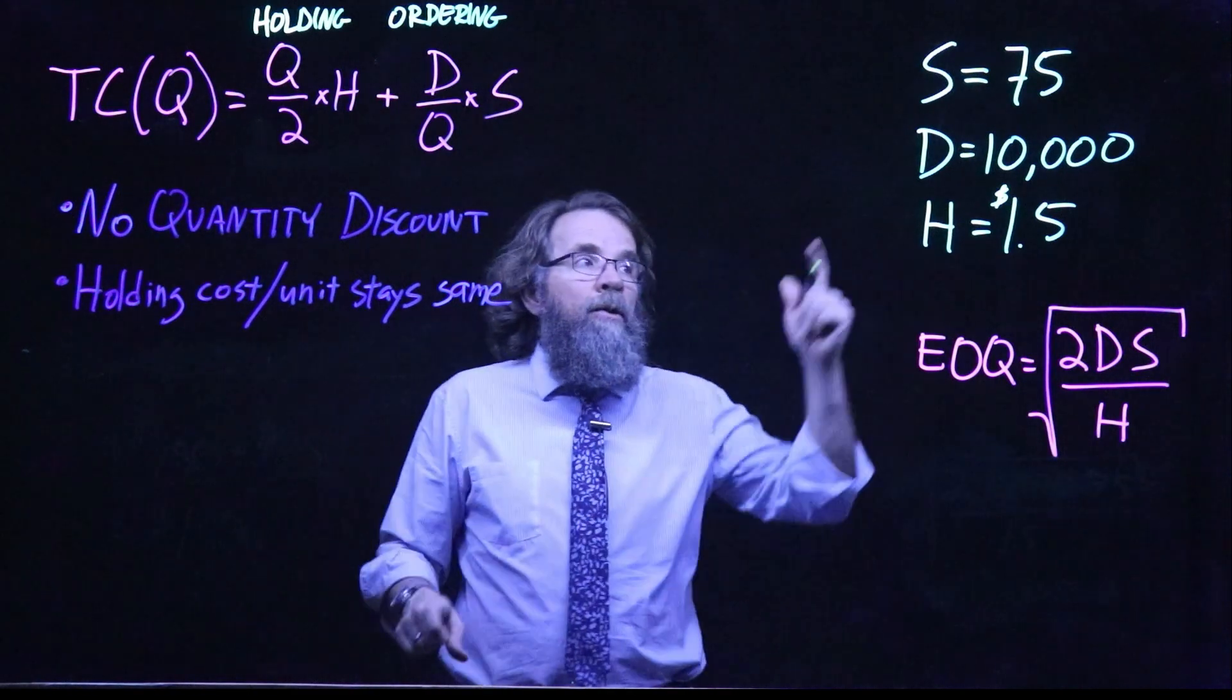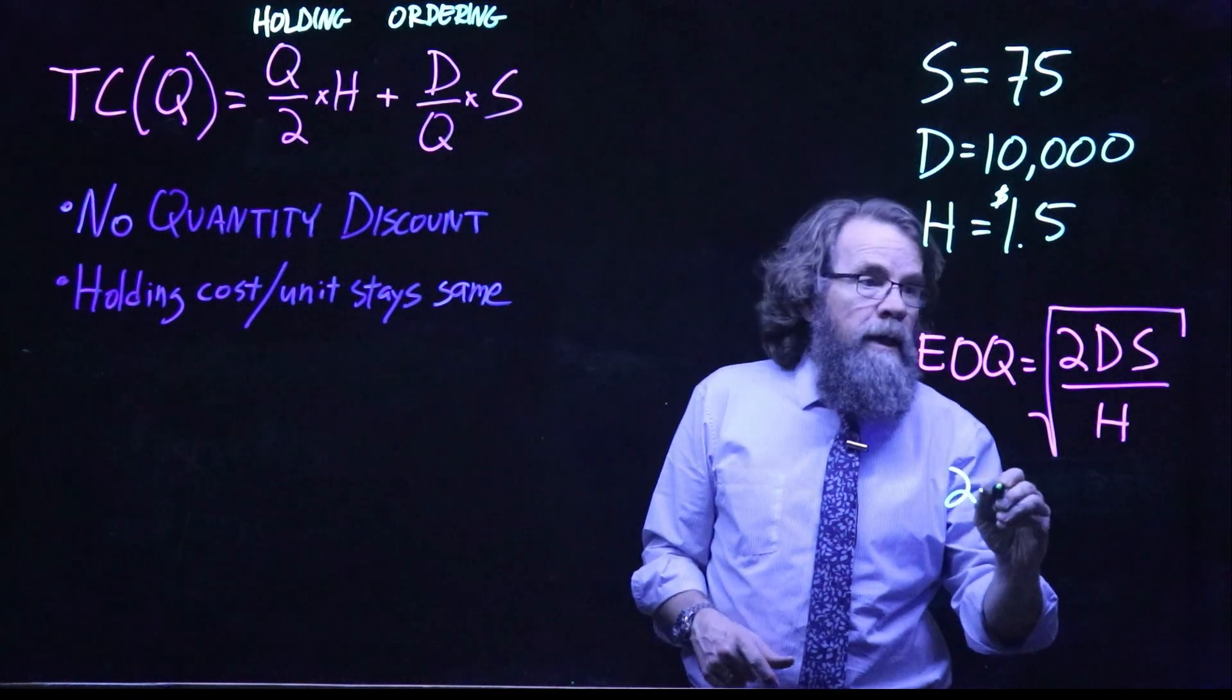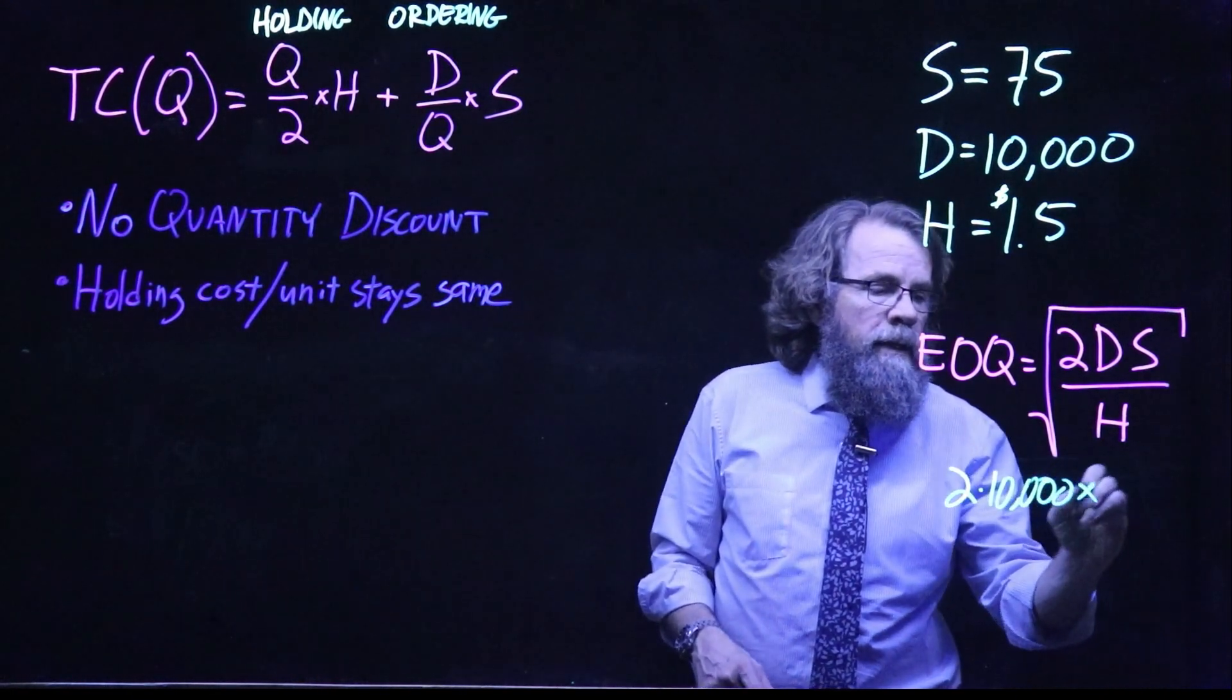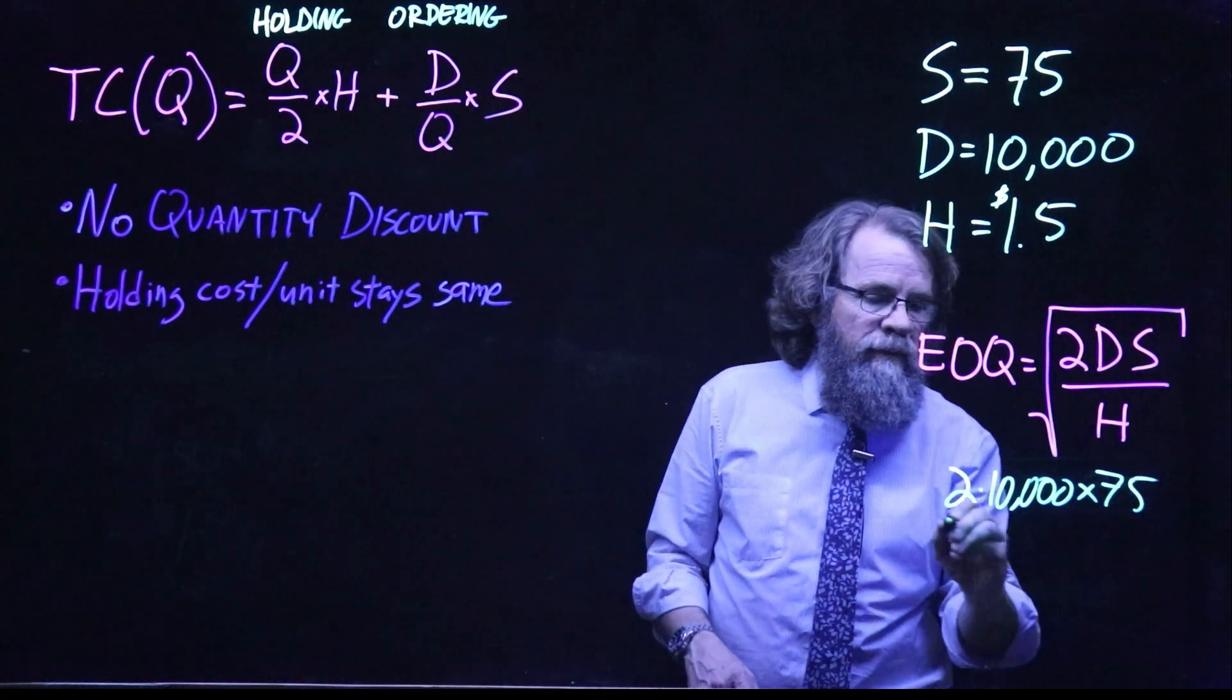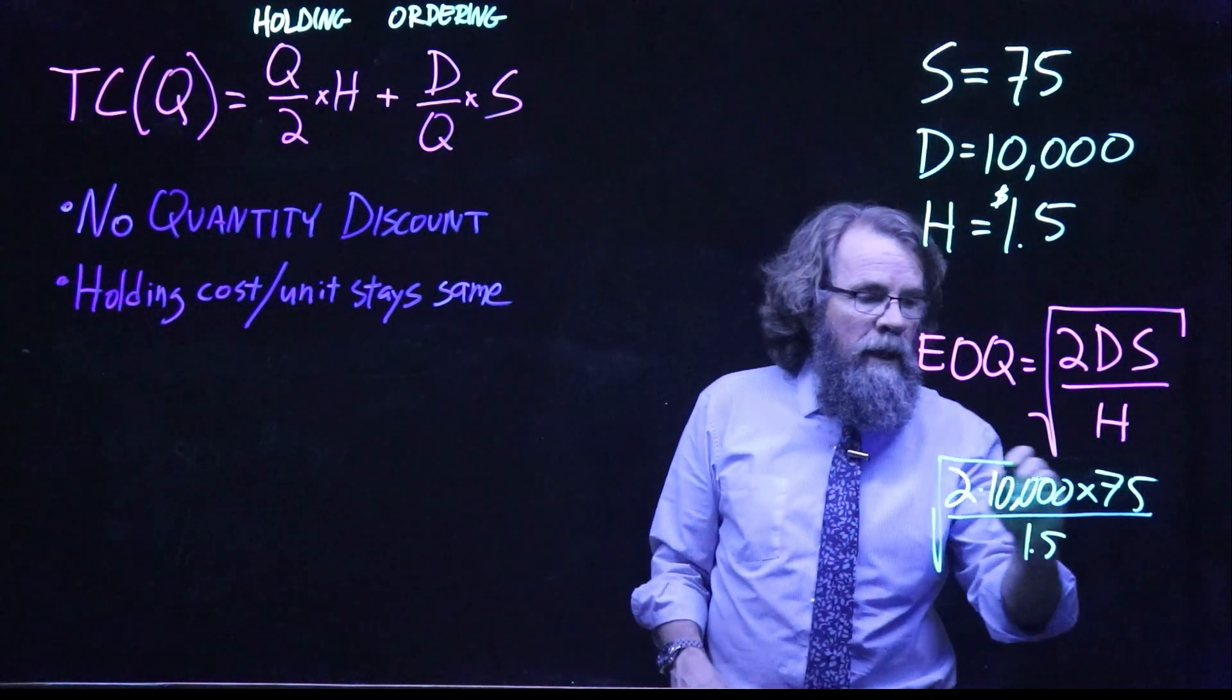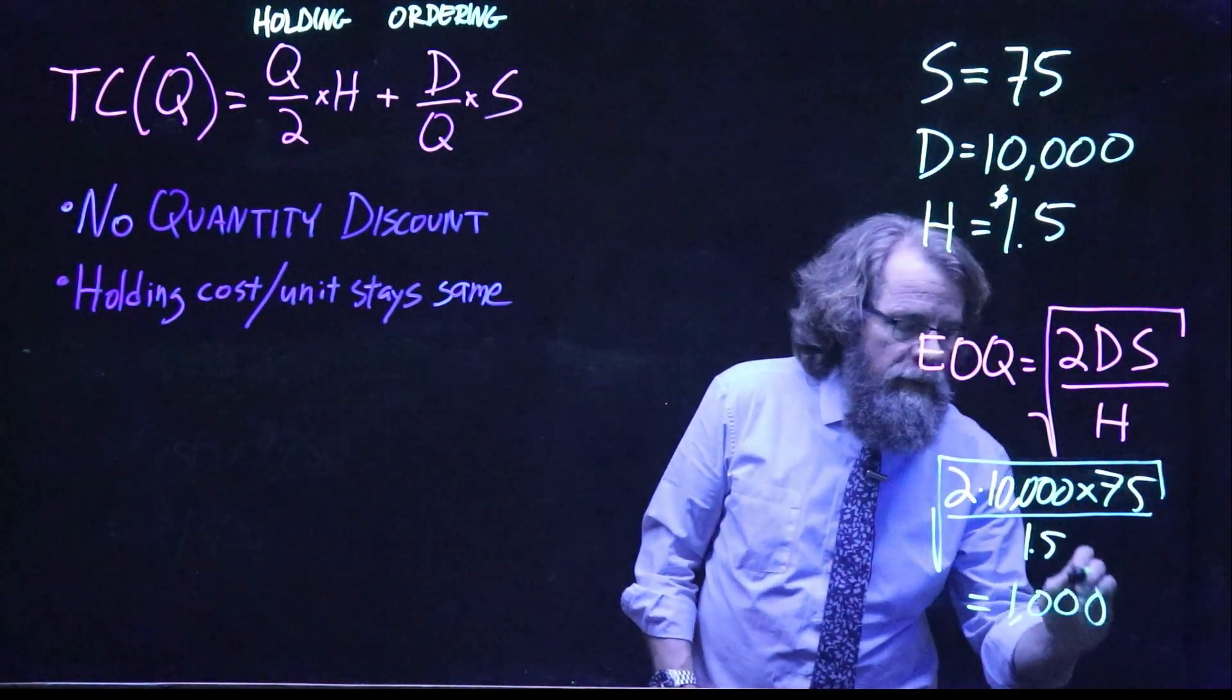So let's jump in. To calculate the EOQ, as you probably already know, we take two times the annual demand, which is 10,000 units, times the setup or ordering cost of $75. And then we divide by the holding cost per unit of $1.50. And so we get an EOQ of 1,000 units.